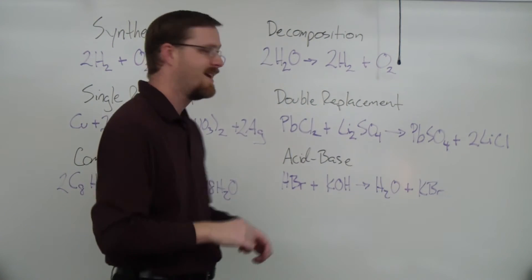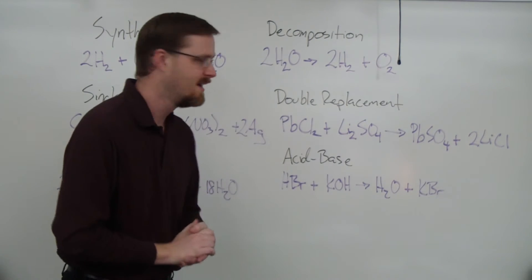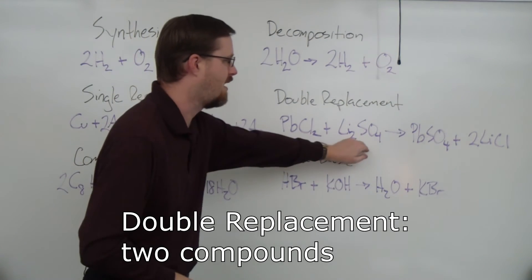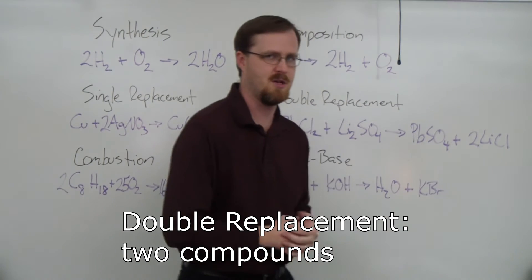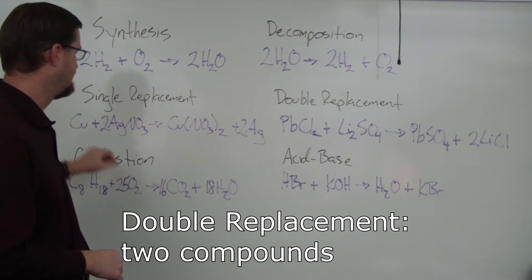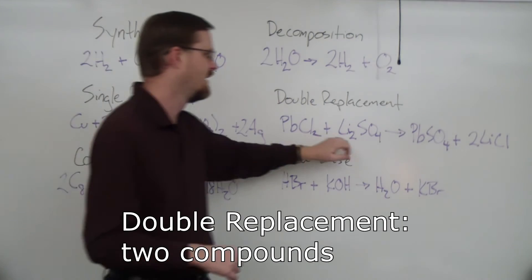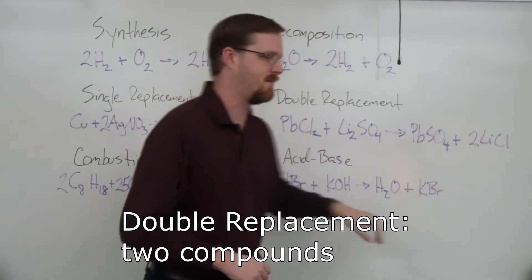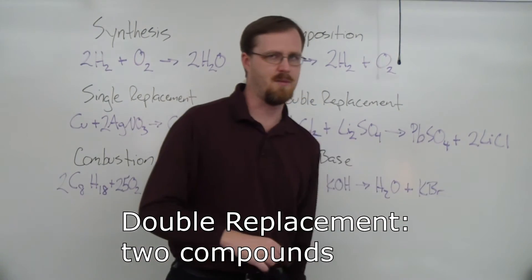And its identifying characteristic is the fact that you have two compounds on both sides of the equation. Over here with single replacement it was one element and one compound on each side. Here, everything is a compound. Two compounds here, two compounds there. That's double replacement.